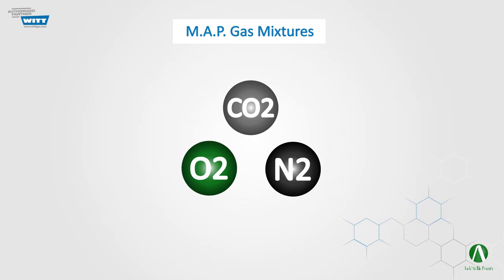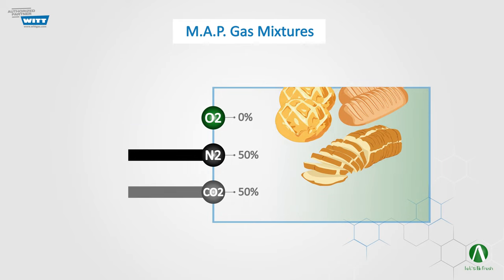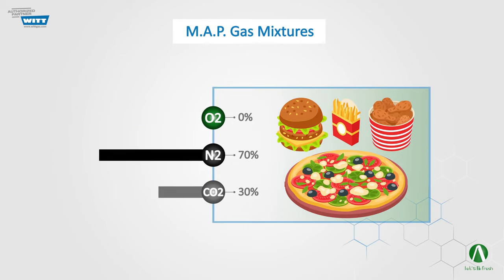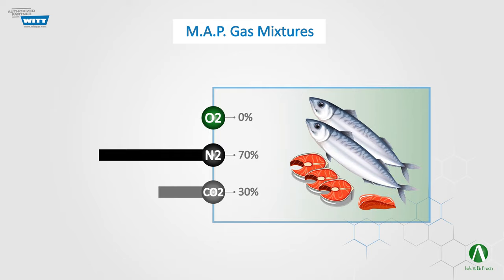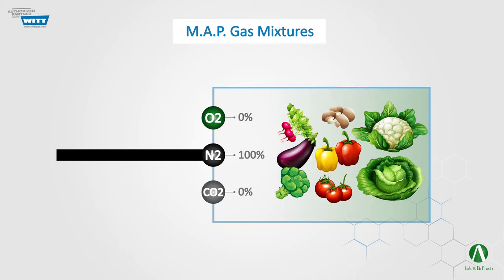In our previous video called 'Let's know more about MAP,' we showed you how Modified Atmosphere Packaging, or MAP, increases the food shelf life and sellability, as well as maintaining food quality during its storage period. We have provided a link to that video in the description. But how do we implement optimal MAP? This is what we aim to answer in this video, so please stay with us to find out more about the details and equipment of an ideal MAP system.